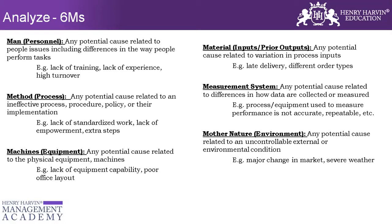We have to understand that from the define phase, we decided and agreed on one issue that we are looking at controlling or improving. So here, out of all the 70 or 80 ideas, we have to figure out which ones are contributing maximum to the particular problem we are focused on improving. And how do you decide that? Right now you don't have any data. So we have to determine which are more process-related causes that can be fixed without the data.